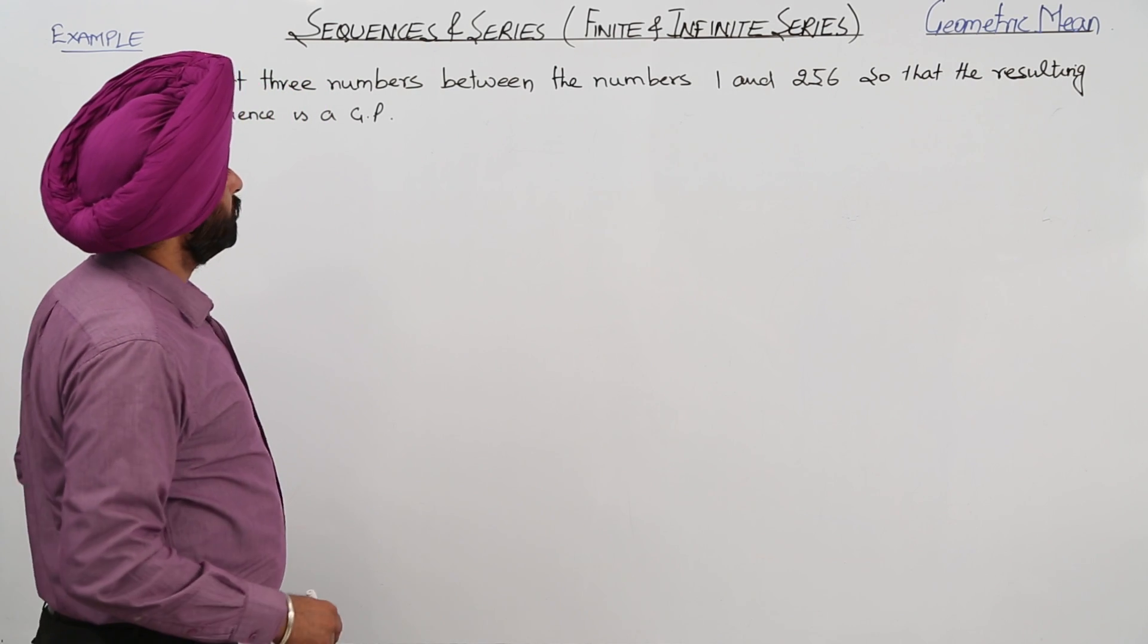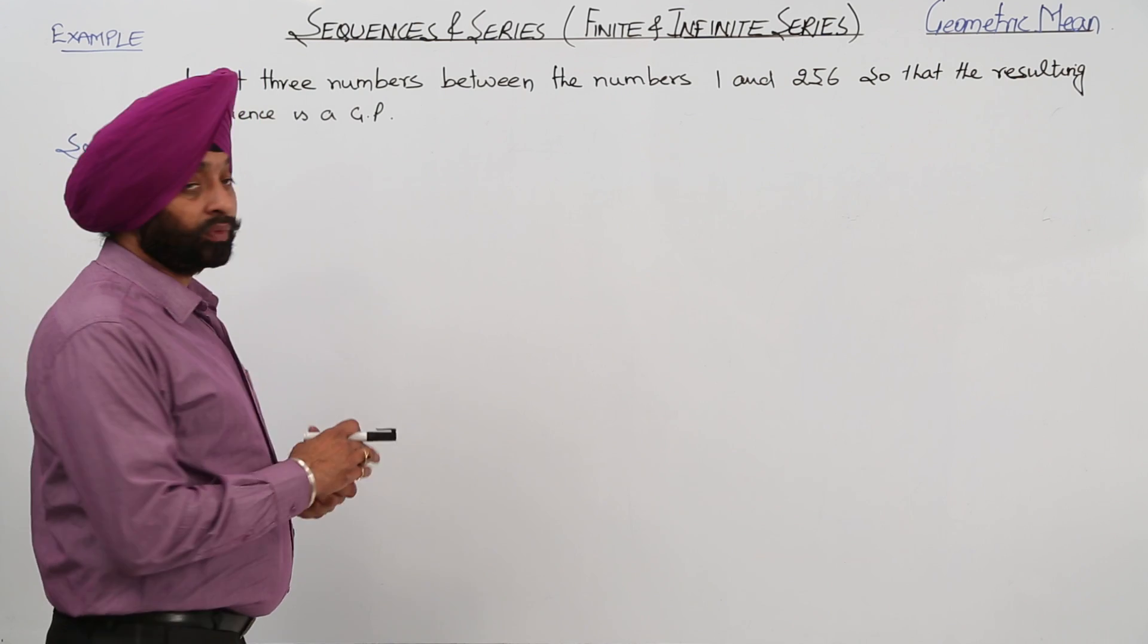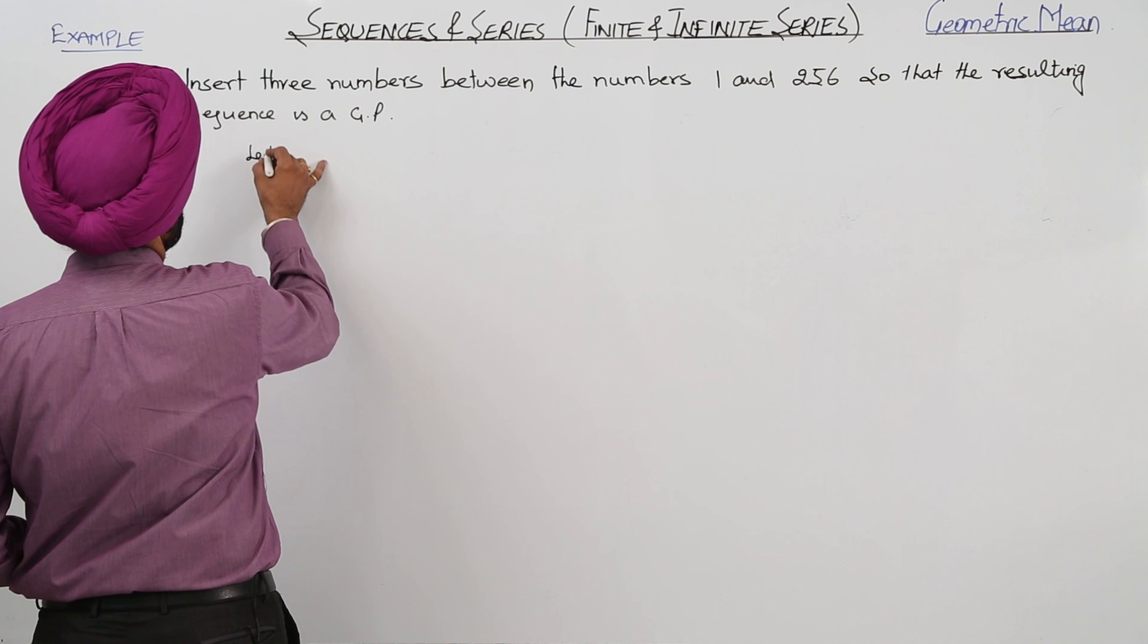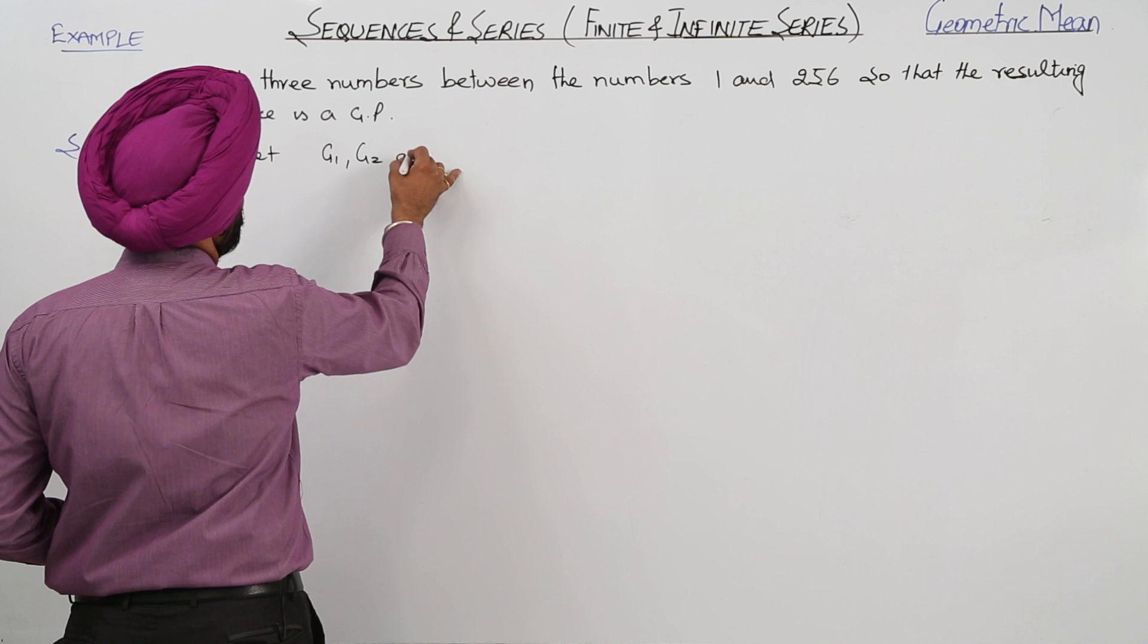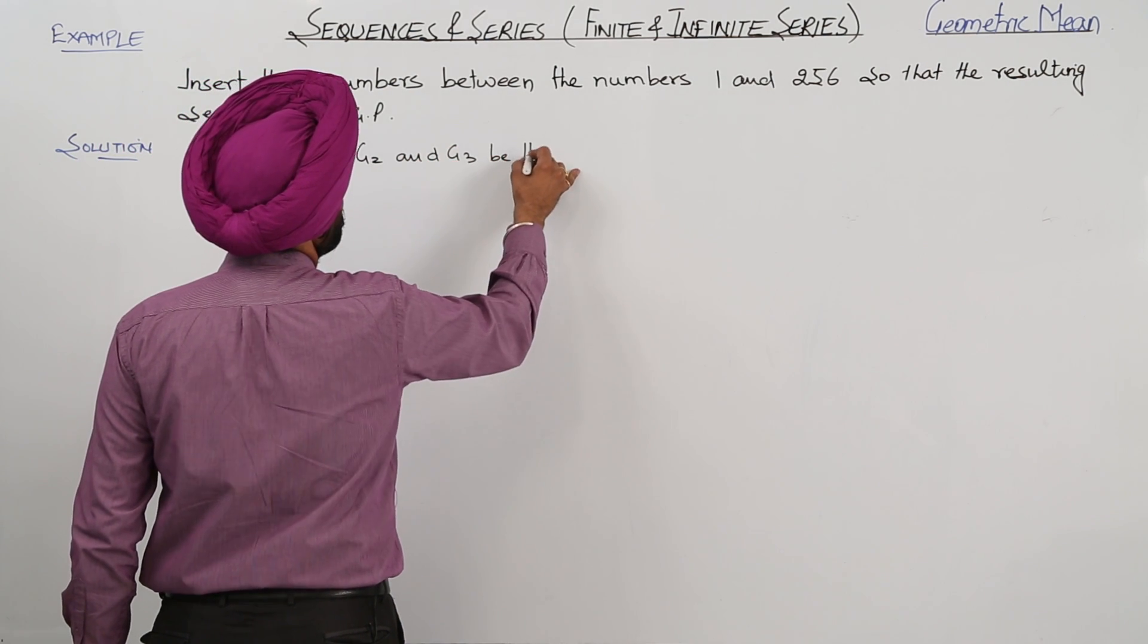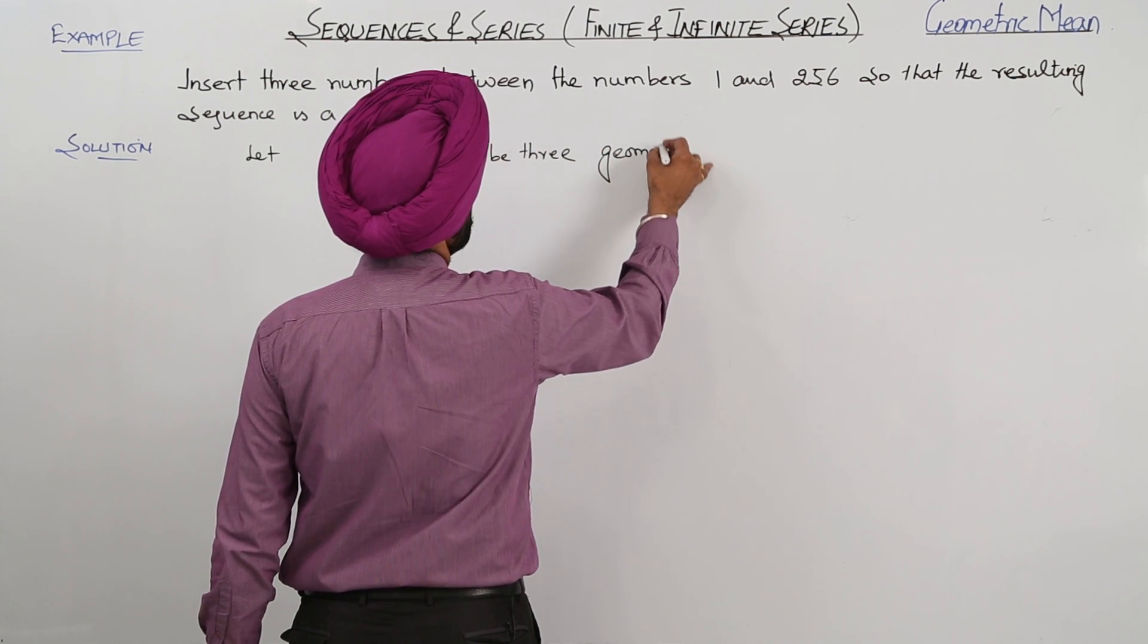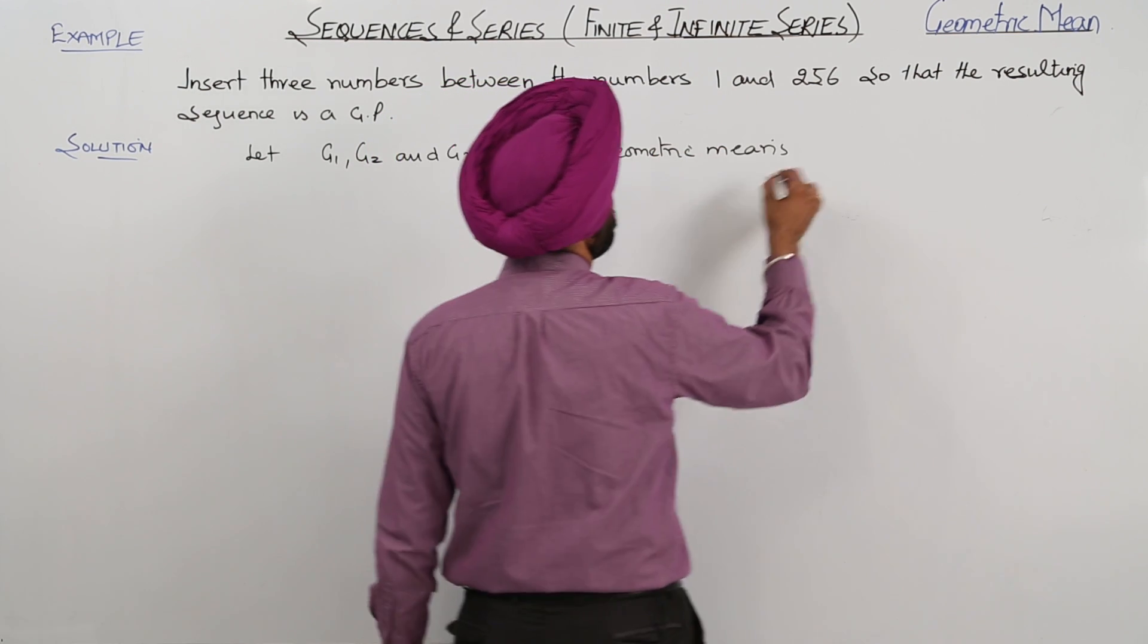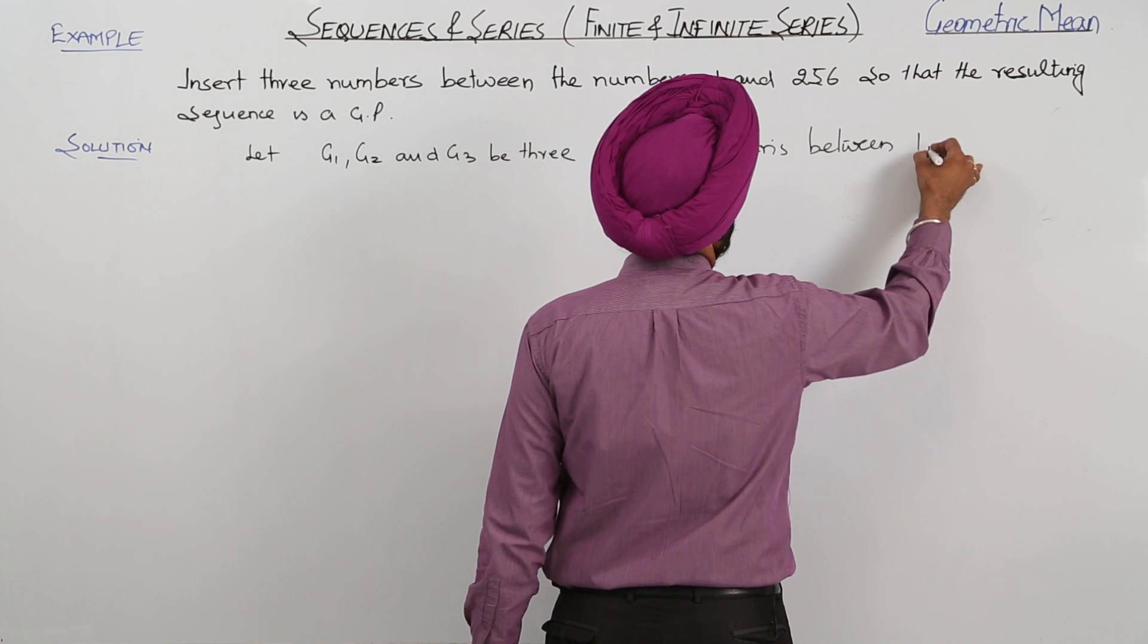In this example, we have to insert 3 geometric means between 1 and 256. Let G1, G2, and G3 be the 3 geometric means between 1 and 256.